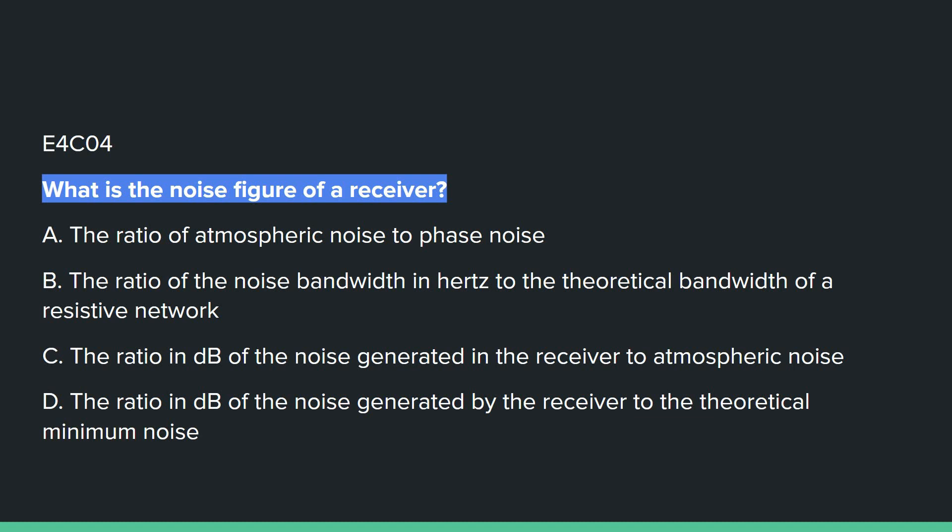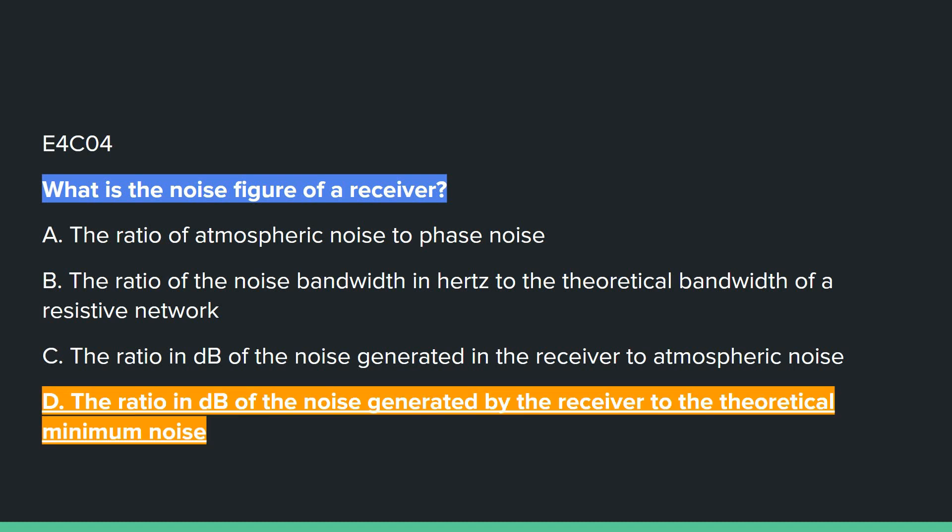E4C04: What is the noise figure of a receiver? Answer D: the ratio in dB of the noise generated by the receiver to the theoretical minimum noise.